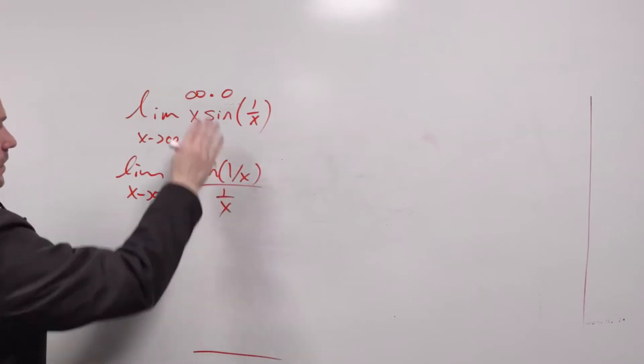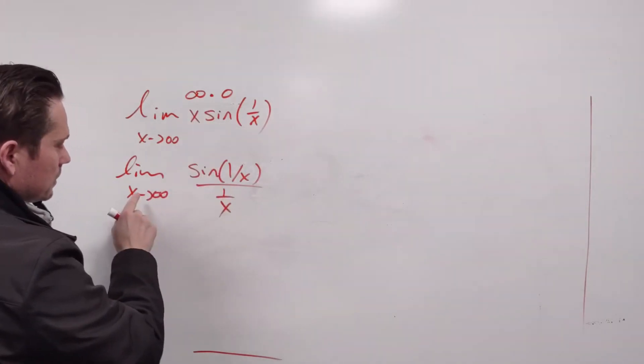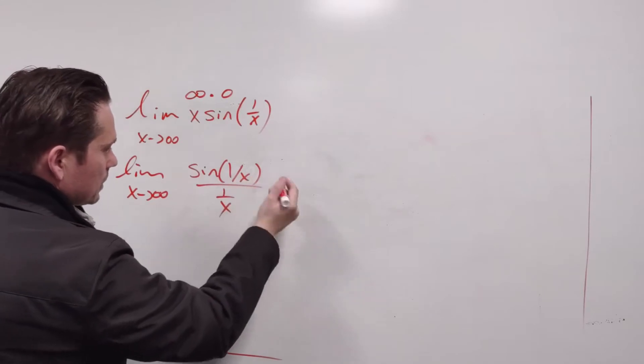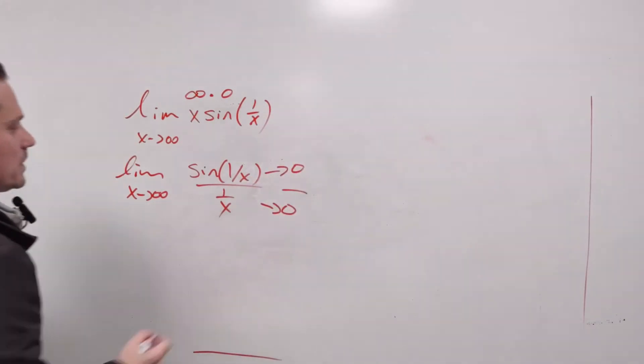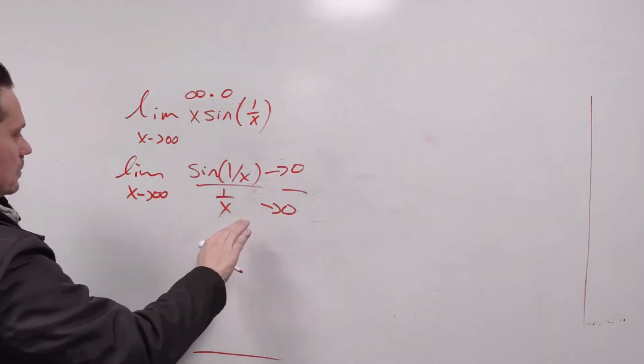This form is equivalent to this one. The only difference is now when you take the limit as x goes to infinity, the top here goes towards 0, and the bottom also goes towards 0. So we have 0 divided by 0, that form, which means we can use L'Hopital.